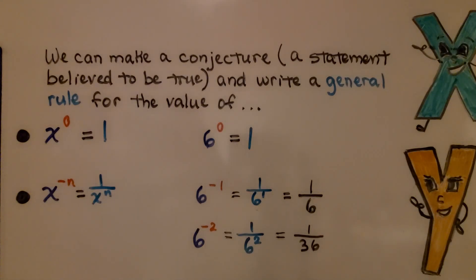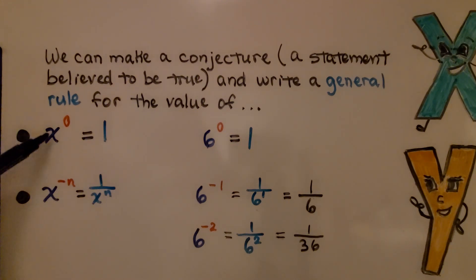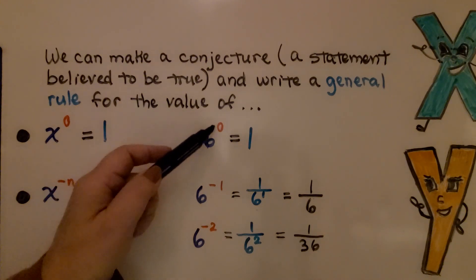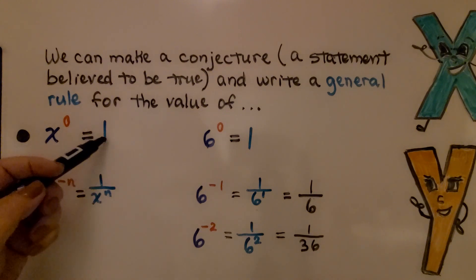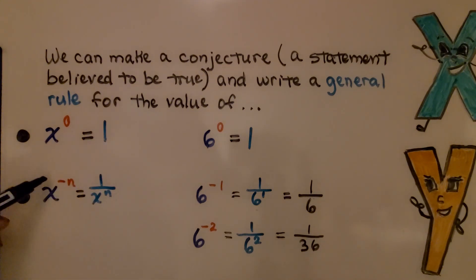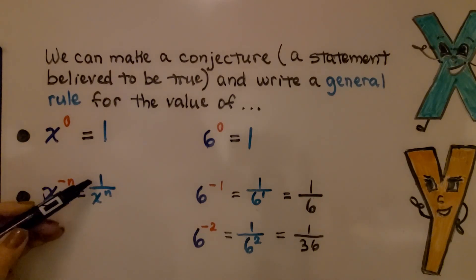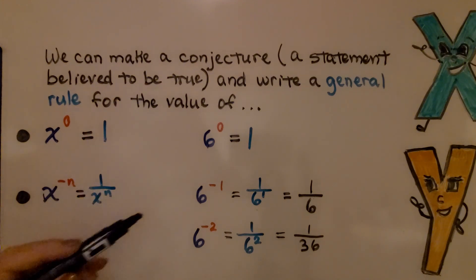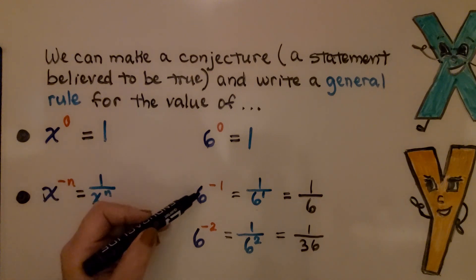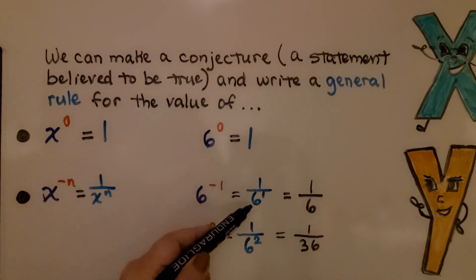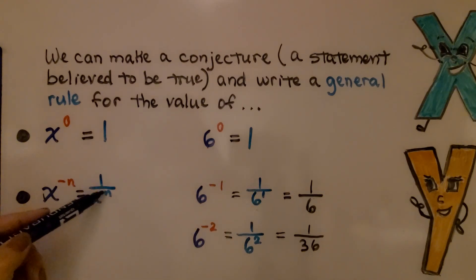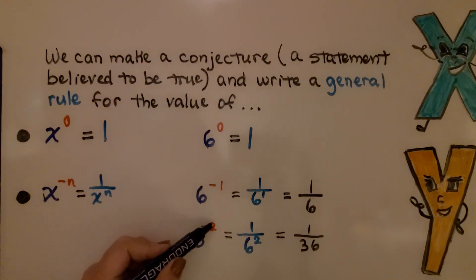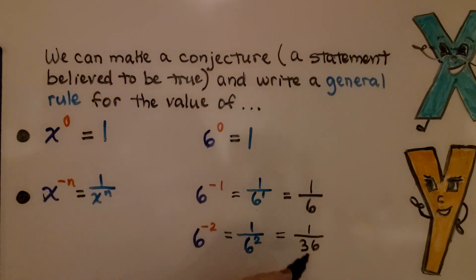We can make a conjecture — that's a statement believed to be true — and write a general rule for the value of x to the zero power. Whatever number x represents, it's going to equal 1. Some number to the zero power is going to equal 1. If x equals 6, then 6 to the zero power equals 1. That's our general rule. If we had some number x to the negative n, it's going to give us a positive fraction: 1 over x to the n power. If x is 6 and n is 1, we'd have 6 to the negative 1 equals 1 over 6 to the first power. If we had 6 to the negative 2nd power, we'd have 1 over 6 to the second power, which is 1 thirty-sixth.